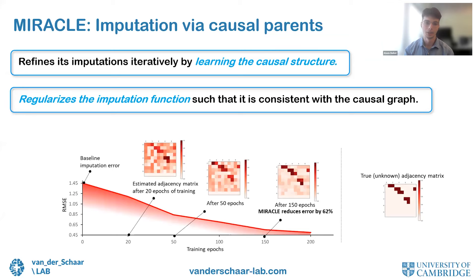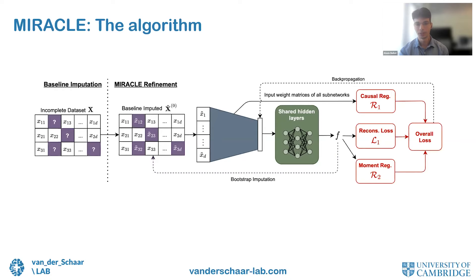MIRACLE is an algorithm that uses these insights to improve imputation. It goes through two steps: first it refines imputations by jointly learning the causal graph together with missing indicators, then regularizes the imputation such that learned functions are consistent with the causal graph — using causal parents for prediction rather than spurious associations. You start with a baseline imputation error, and as you refine the causal structure and force the imputation method to use causal parents, imputation improves over several training rounds.